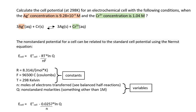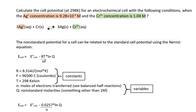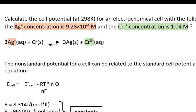In this particular cell, the concentration of the silver ion, the reactant, starts out as 9.28 times 10 to the minus 4, very very small. And the chromium ion, the product, starts off just about at 1 molar. Because the product concentration is so much larger than the reactant concentration, we could anticipate that the reaction would proceed in the reverse direction to attain equilibrium.